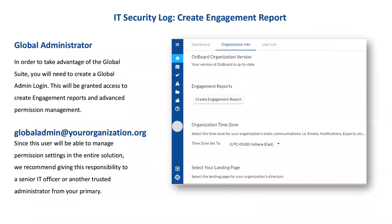Besides permission controls, the global administrator also has the ability to change organizational-level settings — basically go in and adjust whether your organization is using two-factor authentication, if they require pin logins, and other high-end security functions. Even IP filtering controls are available there for a global administrator.